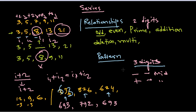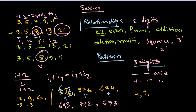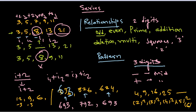You should also check sequentially: odd, even, prime, addition, deletion, multiplication, and also squares and cubes. For example: 4, 9, 16, 25 — this is 2², 3², 4², 5², so the next number would be 6² = 36. That's how you calculate using squares. Cubes work similarly.